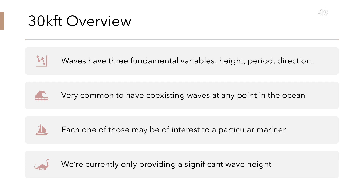Right now, we're only providing significant wave height, which is the average of the highest one-third of waves at a particular point or region in the ocean. That information is extremely valuable, but it does not tell us when there are multiple waves passing through each other at a particular point in the ocean, or vital information such as period and direction.